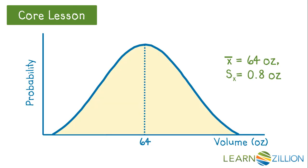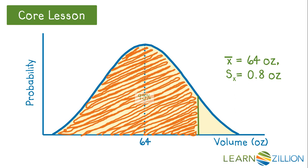Sometimes we want to perform this operation the inverse way. That is, we know the percentage and are looking for the corresponding value on the x-axis. A graphing calculator can be used to find some threshold value that a given percent of the data is above or below. This is related to the idea of percentiles, which are values that a certain percent of the data falls below.